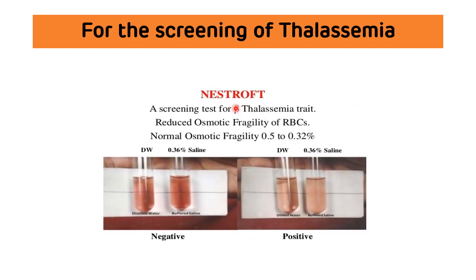There is one test available for the screening of thalassemia called the NESTROF test — Naked Eye Single Tube RBC Osmotic Fragility Test. It is the screening test for beta thalassemia trait. If a person is positive for beta thalassemia trait, the osmotic fragility of the RBC will be reduced, while normal osmotic fragility of RBC is around 0.5 to 0.32%.